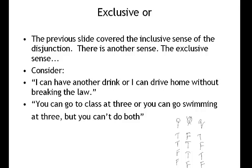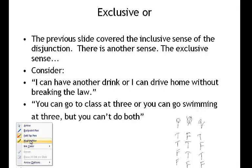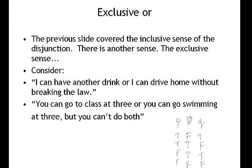Inclusive OR is slightly different from exclusive OR. Exclusive OR is the other sense of disjunction — the kind of case that says 'I can have another drink or I can drive home without breaking the law,' with the intention that you can't do both. Or: 'you can go to class at three or you can go swimming at three, but you can't do both.' The symbol we use for exclusive OR is a circle with an X through it.